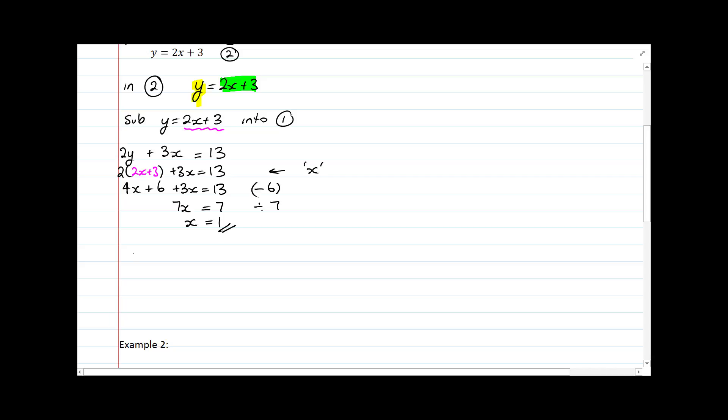x is equal to 1. Now I'm going to substitute that first part into equation number 2. This is already written as y equals a function of x, so I'm going to use that feature. And in this case y is now equal to 2 times 1 plus 3, which is equal to 5. So I get the solution over here that x is equal to 1 and y is equal to 5.